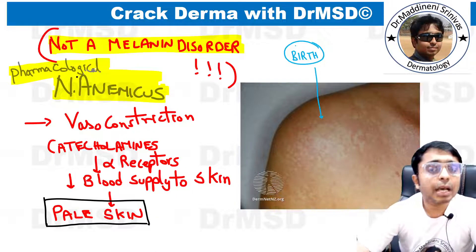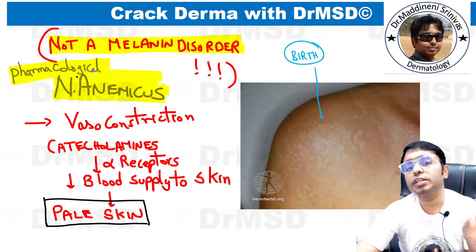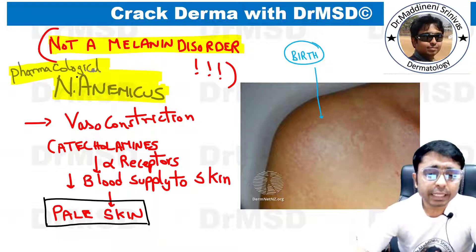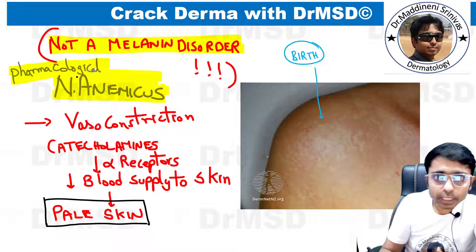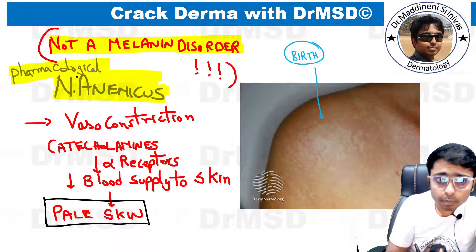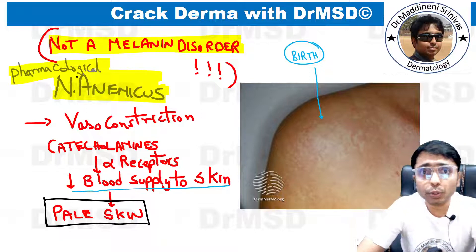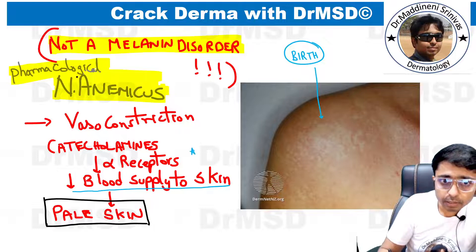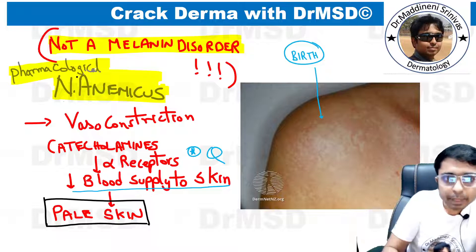This hypopigmentation is seen since birth. It is not due to a defect in melanin, melanocytes, or melanosomes — all these components are functioning normally. The only problem is that these patients have an excessive response to catecholamines present in the blood, which causes reduced blood supply to the skin due to excessive vasoconstriction produced by catecholamine effect on alpha receptors.